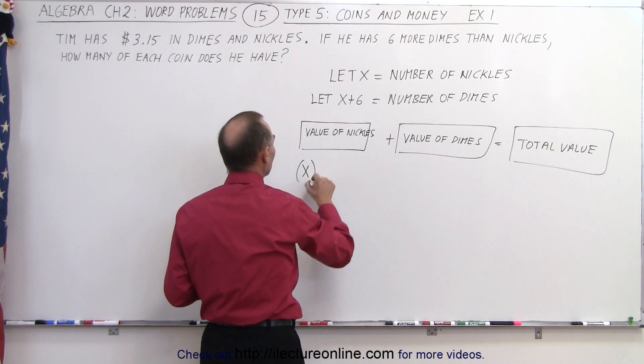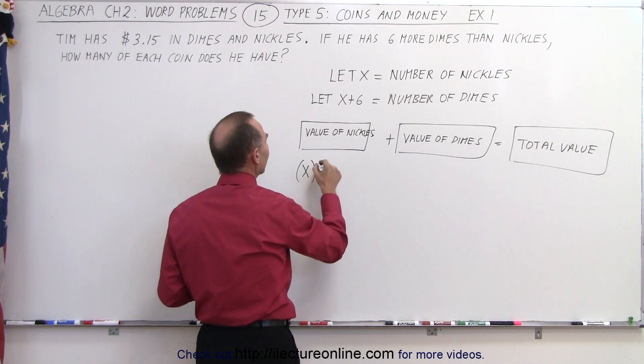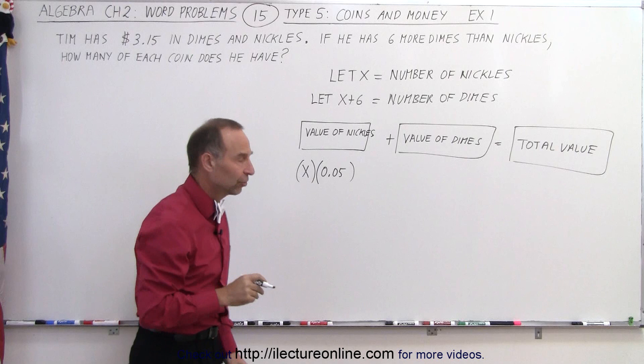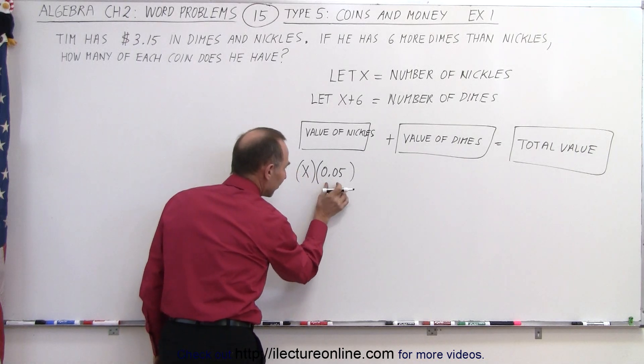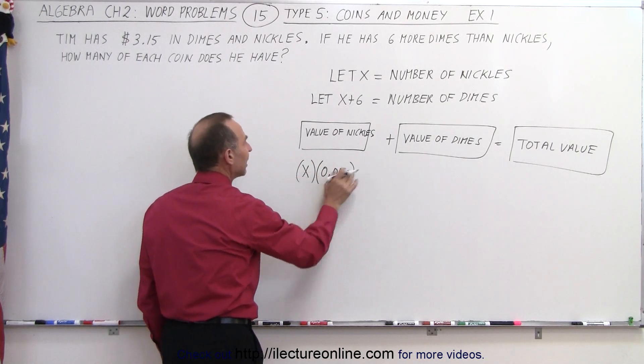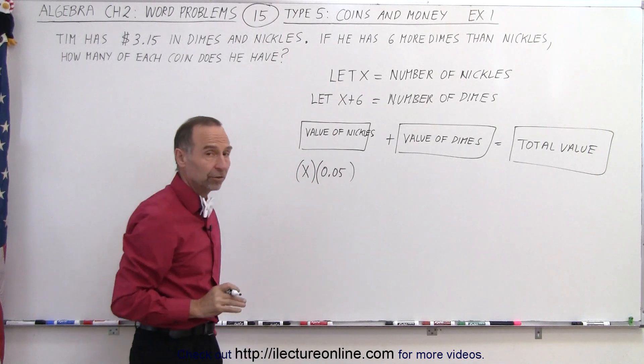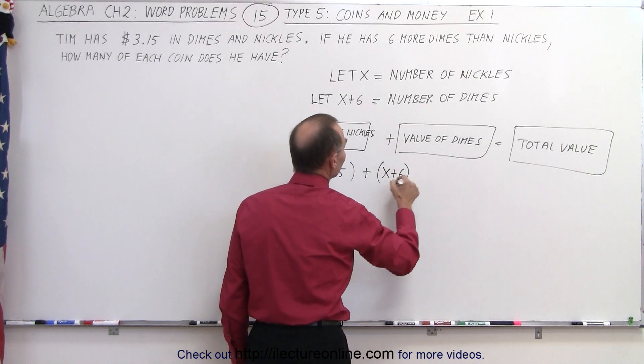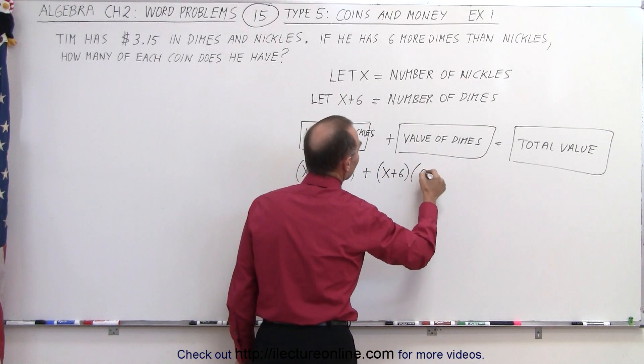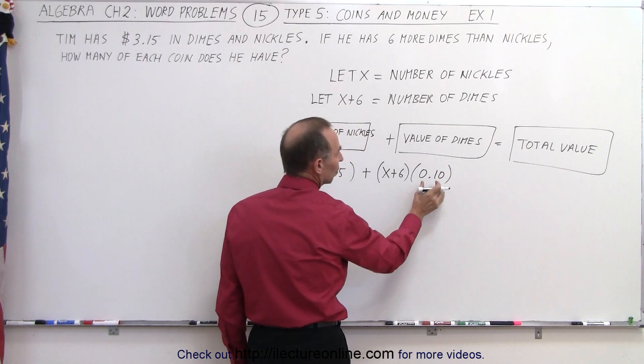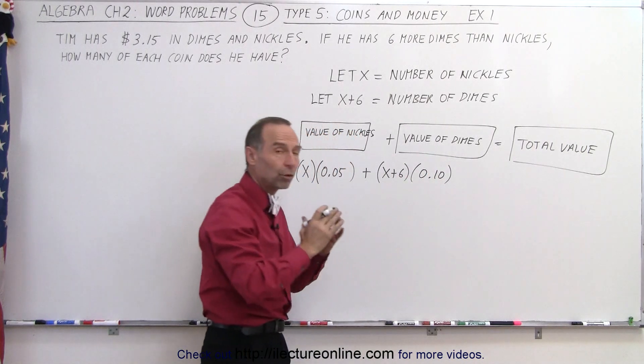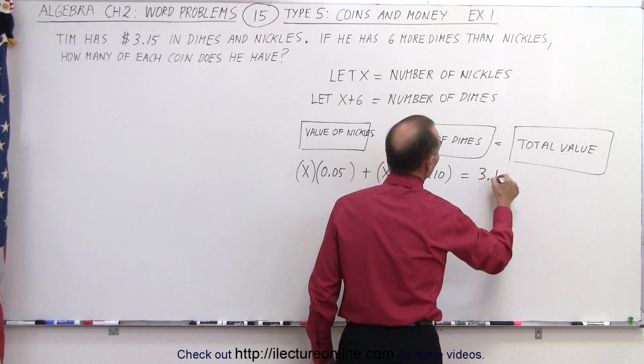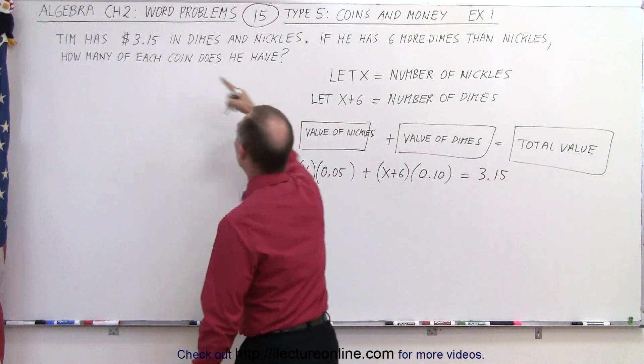So we're going to take x which is the number of nickels that we have times 0.05 which is the value of each nickel. So you multiply the value of each nickel times the number of nickels and that gives you the total value of all the nickels. Now we're going to do the same with the dimes, plus x plus 6 is the number of dimes that we have and we're going to multiply that times the value of each dime. So the value of each dime times the number of dimes gives you the total value of the dimes and together those two add up to the total value of all the coins together which is $3.15.